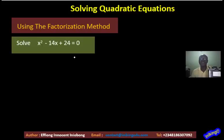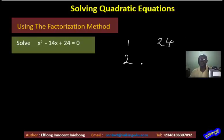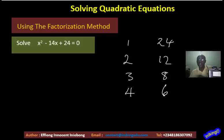I am still making use of 24 — that is deliberate. After some time I will change and use other numbers. Again, using the factorization method, the first thing we do is list out all the factors of 24: 1 and 24, 2 times 12, 3 times 8, 4 times 6.